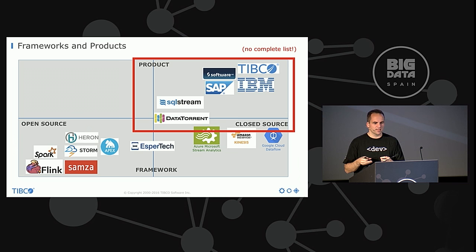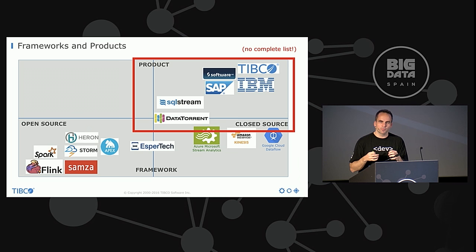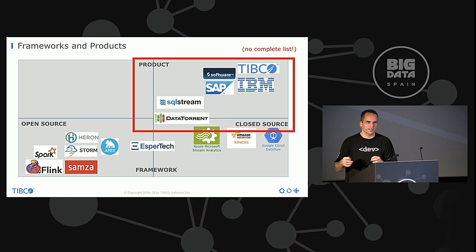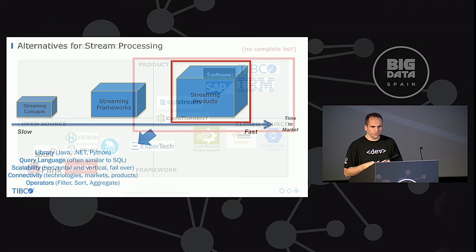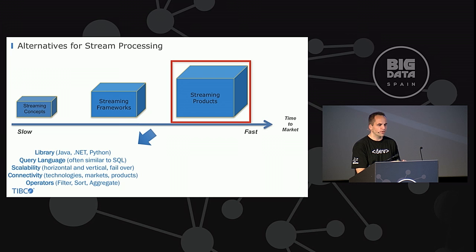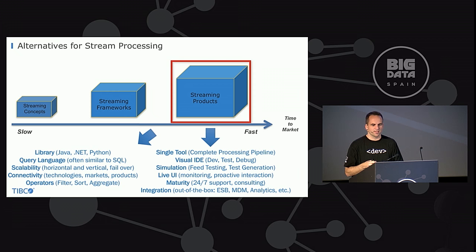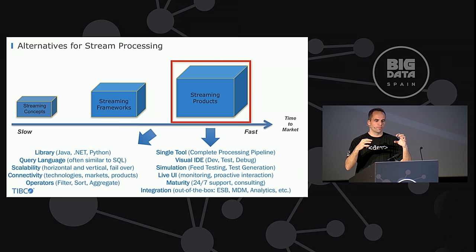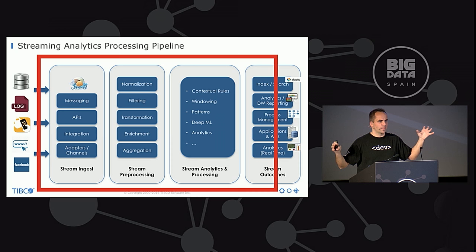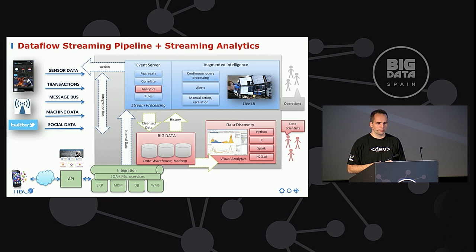On the other side we have commercial products, available for years, emerging especially from financial trading. The key difference between a framework and a product is that the product has all the framework concepts like Spark or Storm, plus additional features: visual coding, one tool instead of many components like NiFi plus Storm plus Kafka, plus features like simulation or live UI that you don't have to build yourself. You build the complete pipeline with one product. The huge difference is you have all-in-one.